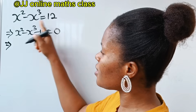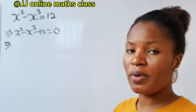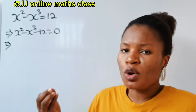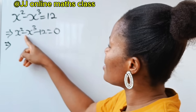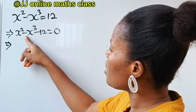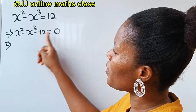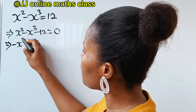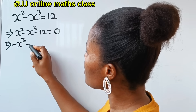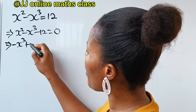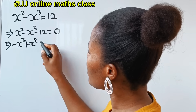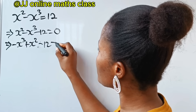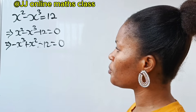This is a cubic polynomial, so let's arrange it the way it's supposed to be. The minus x to the power of 3 is supposed to come first — the degree of 3 comes first, followed by x squared, then minus 12 is equal to 0.